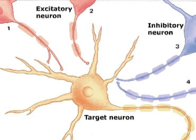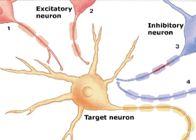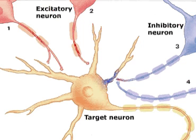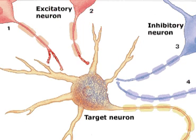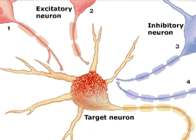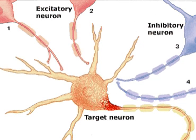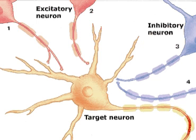An action potential arrives from neuron 3 and causes the target cell to hyperpolarize. When the membrane potential begins to return to its resting potential, excitation is simultaneously triggered by neurons 1 and 2. The temporal and spatial summation of these potentials initiates an action potential at the axon hillock of the target cell.